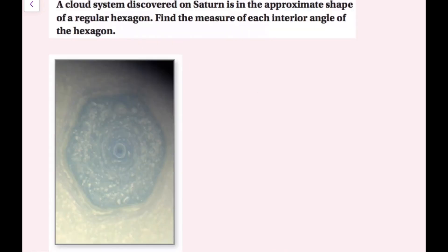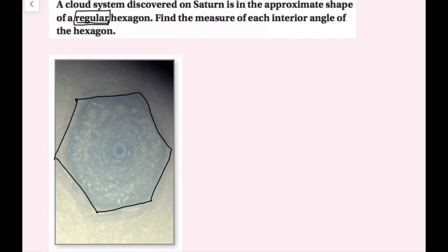A cloud system discovered on Saturn is in the approximate shape of a regular hexagon. Find the measure of each interior angle of the hexagon. The word 'regular' in geometry means all of the sides have the same length and all the angles have the same number of degrees — all sides are congruent and all angles are congruent. A hexagon has 6 sides and 6 angles.